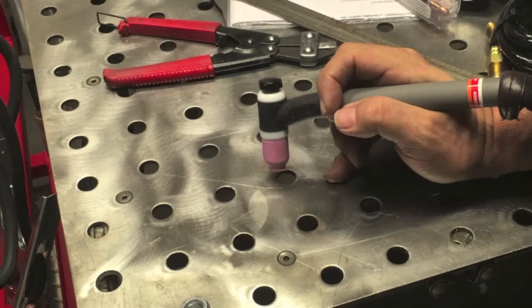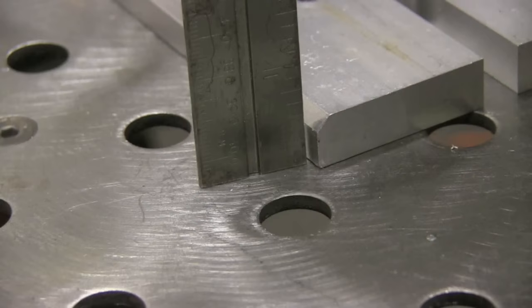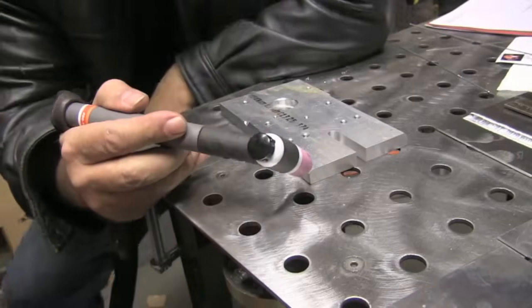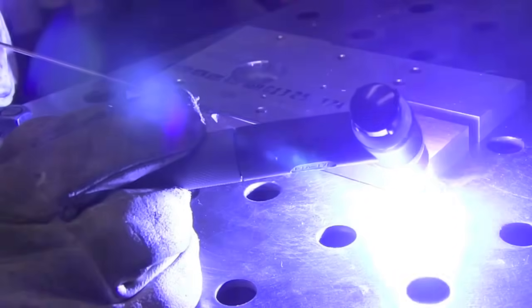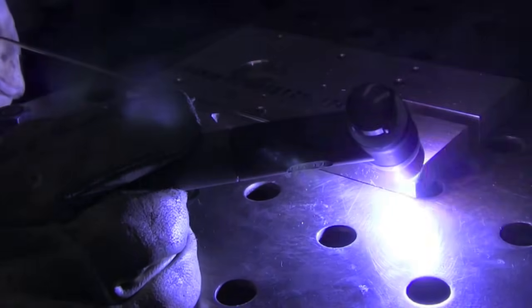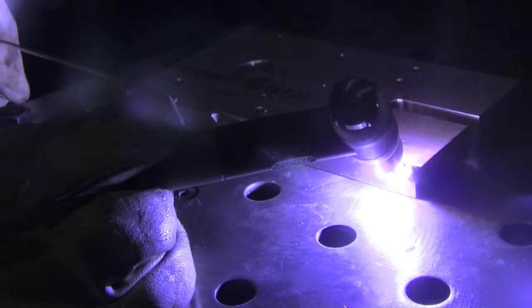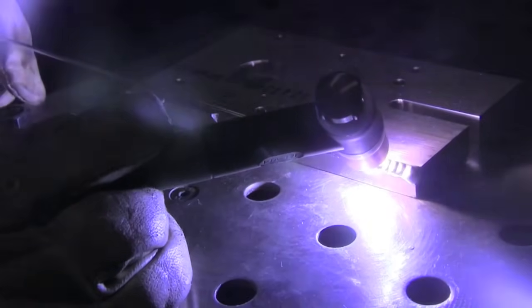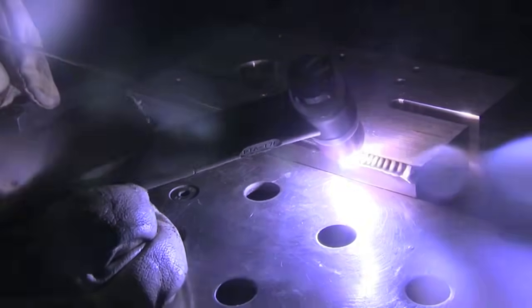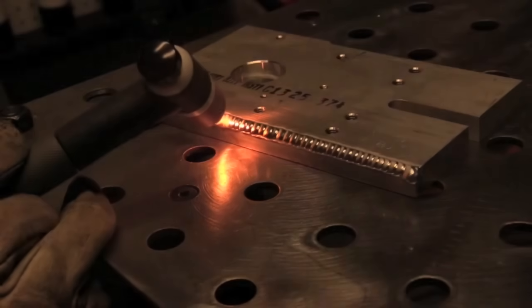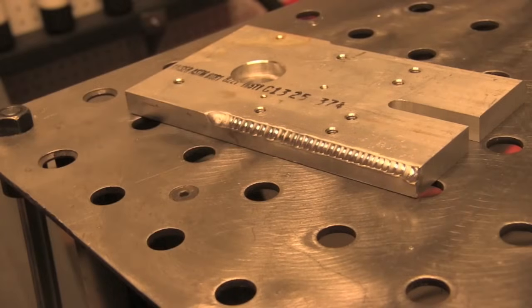All right, what I'm going to do now is just run a bead on some half-inch thick aluminum. It's got a chamfer on it there. This would be a common repair for a machine shop where they accidentally put a chamfer on both sides instead of just one. So this is an instance where I would crank it back down to 60 Hertz, and I'd still use the AC balance at around 65 or 67. And because I don't need to pinpoint a bead, 60 Hertz makes it fan out nice and wide and would probably be what I would select if this were a real repair.